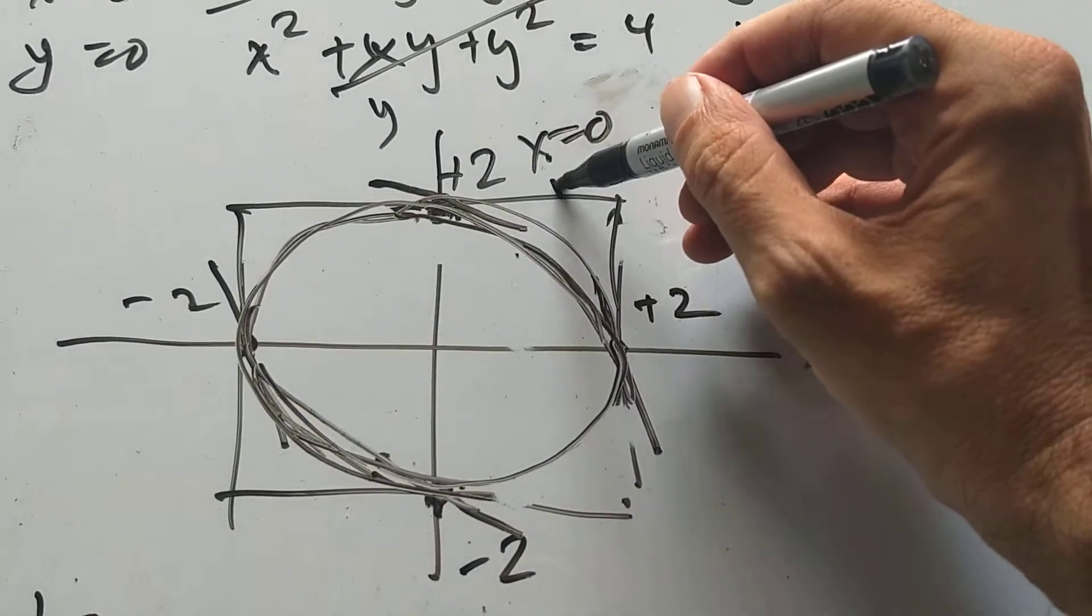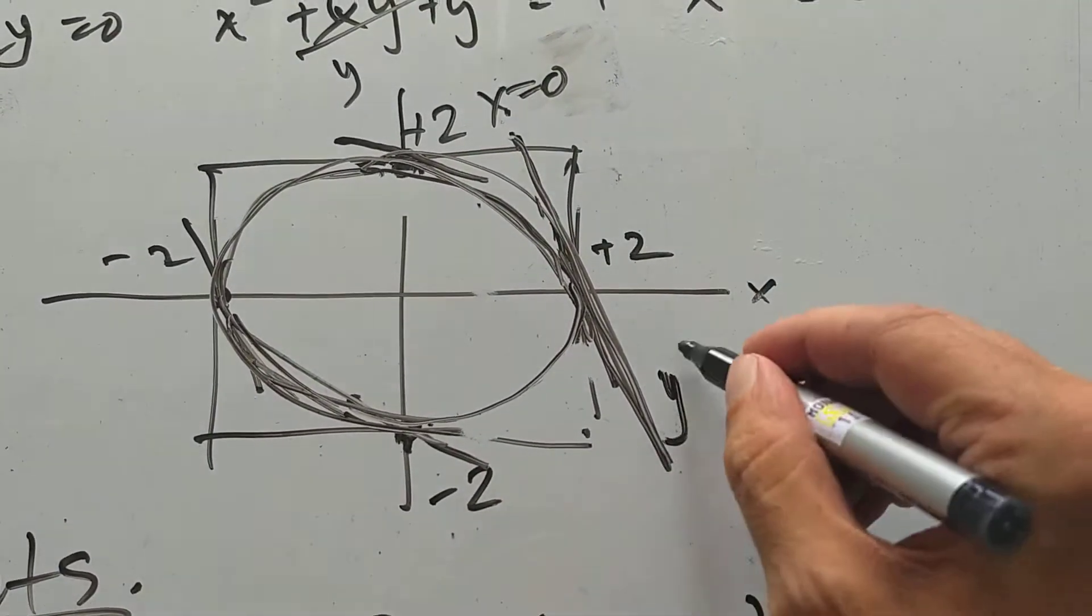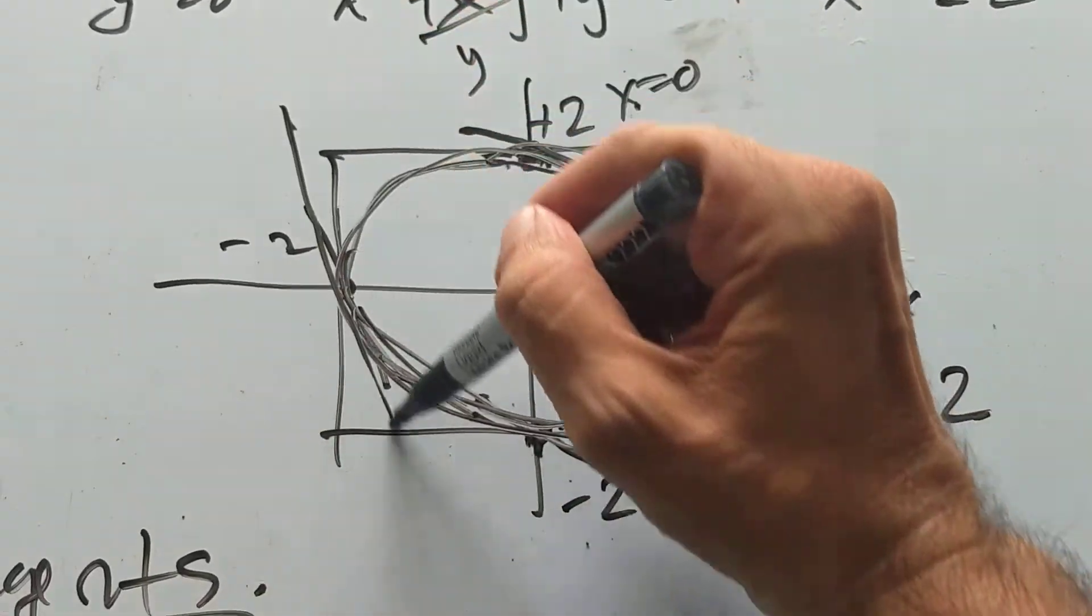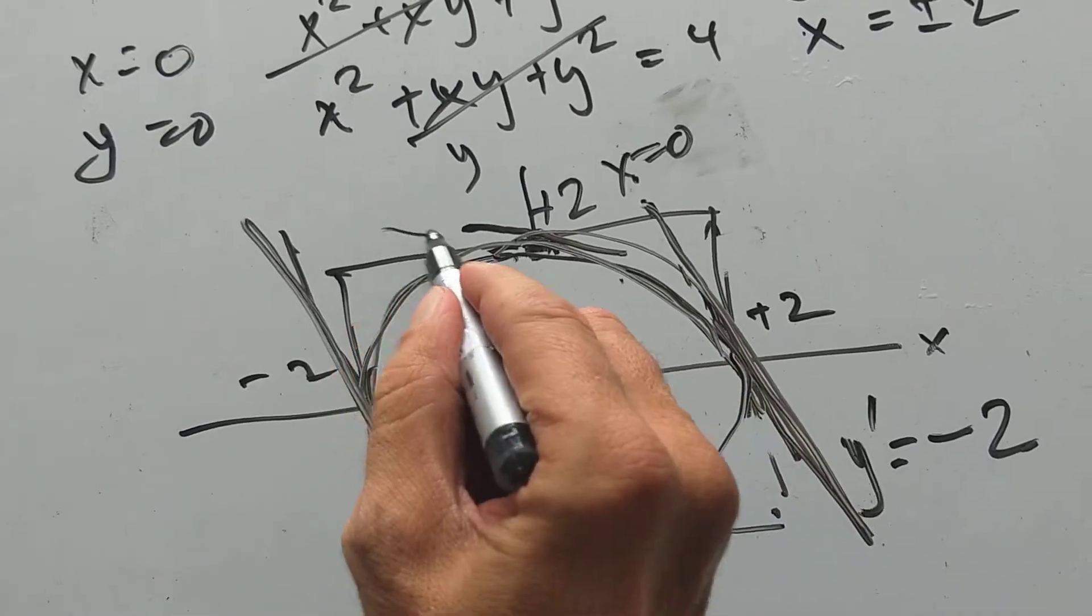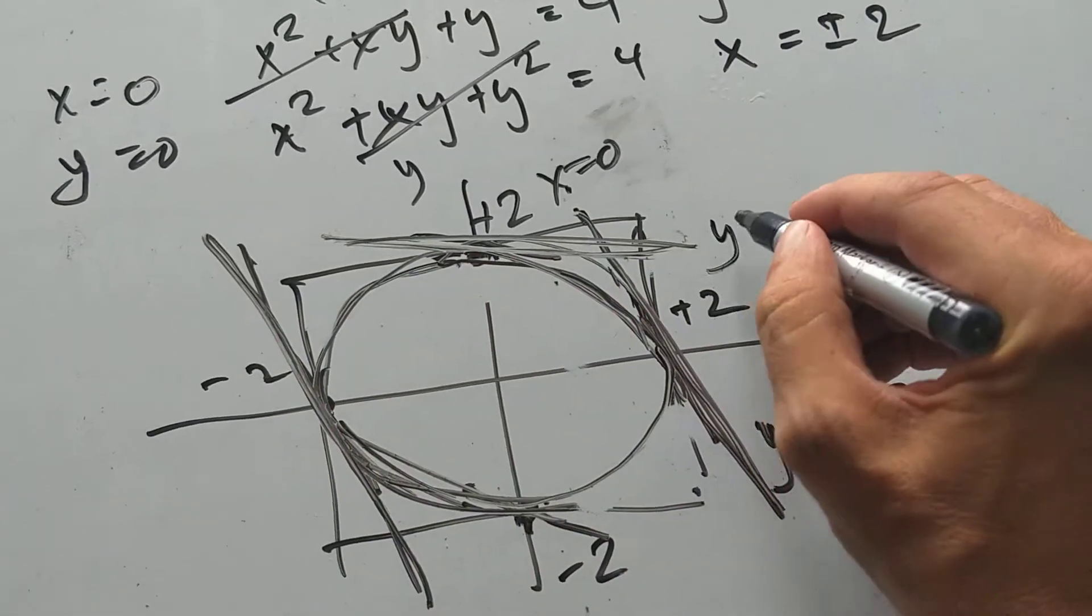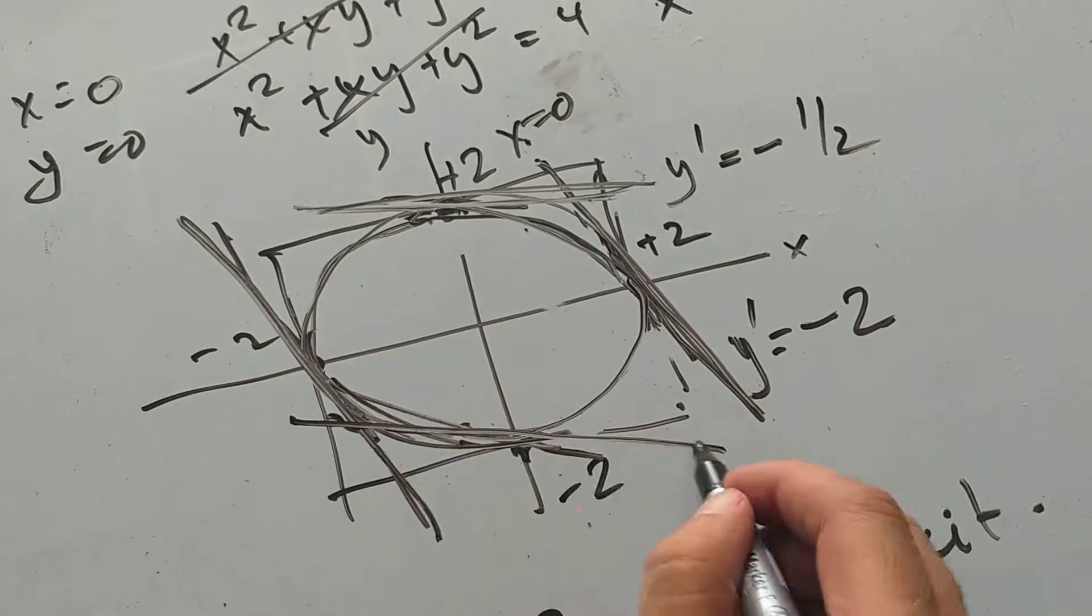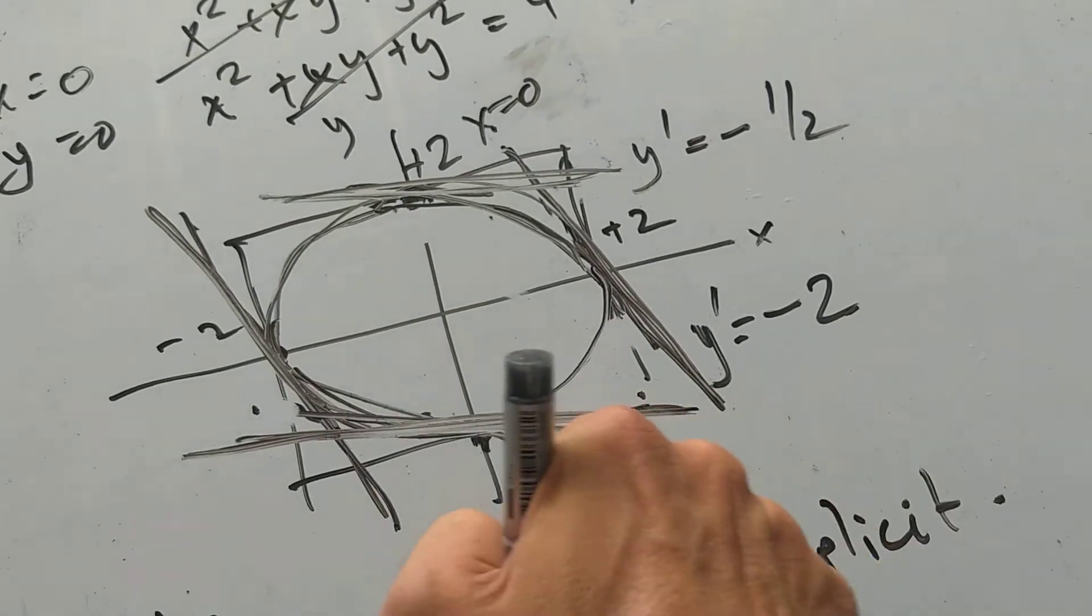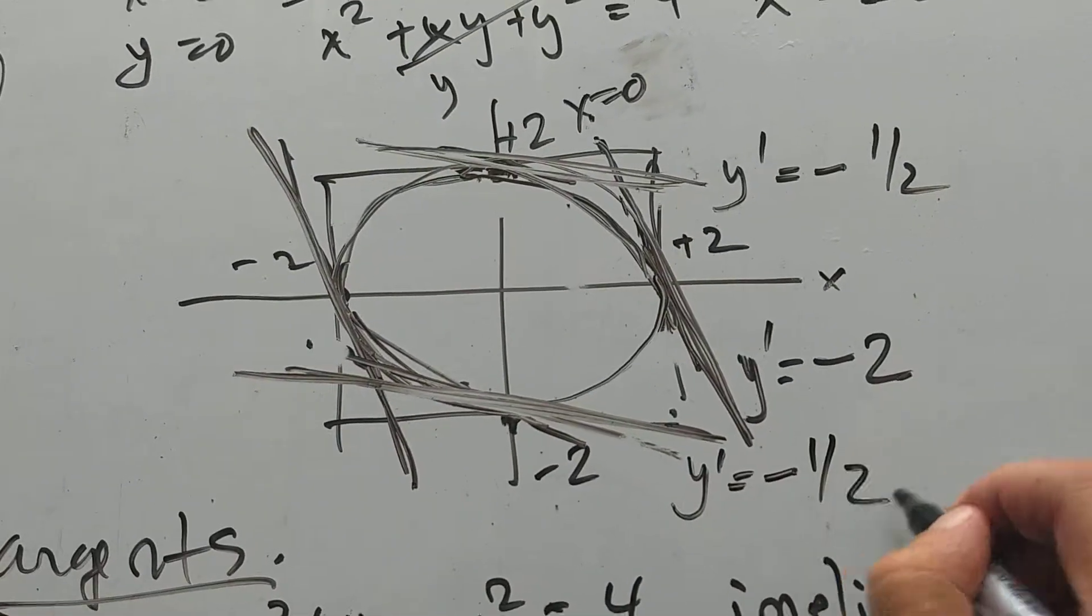Okay, so here, at this point, it's a strong downward slope. Y prime is minus 2. Same here, strong downward slope. And up here, it's weak slope. Here, Y prime is minus 1 half. And here, too, weak downward slope, like this, Y prime is minus 1 half. Well, there it is.